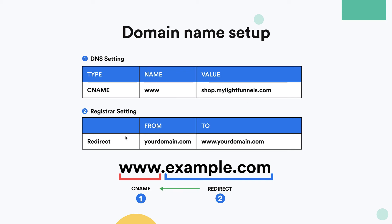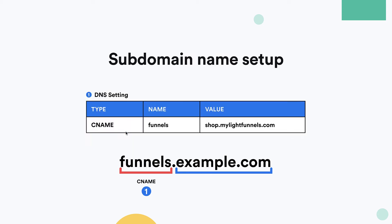You also need to set up a redirection from yourdomain.com to www.yourdomain.com. The redirection will depend on the company you're using — each company has a different user interface, so you just need to find the setting for your redirection; sometimes it's called domain forwarding. If you have a subdomain, all you need is one DNS setting: type CNAME, the name is the subdomain itself, and the value is shop.mylightfunnels.com.